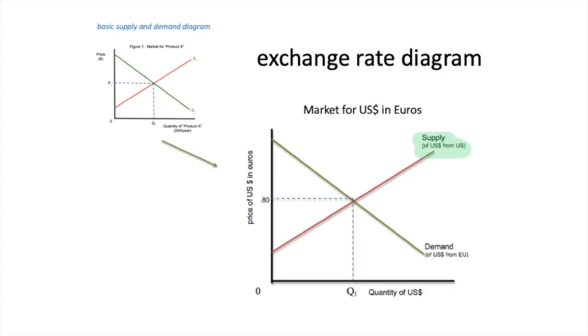So this is the demand for what? For dollars. Where? In Europe. So the only people in the world that have euros are Europeans. That's the other suspension of reality that we have. So this is the demand for U.S. dollars in Europe. And this is the supply of U.S. dollars in the United States.